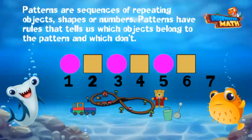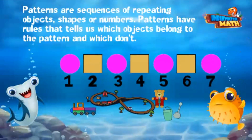After every circle is a square. Another way to describe the rule is that the circle is in the odd places and the square is in the even places. So the next figure in the pattern will be a circle.